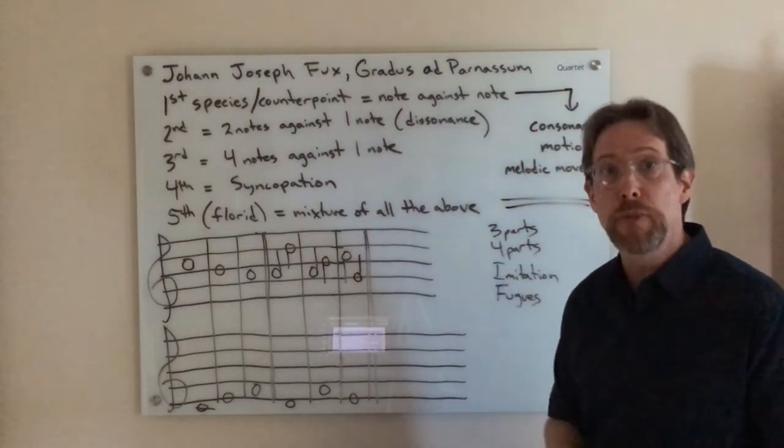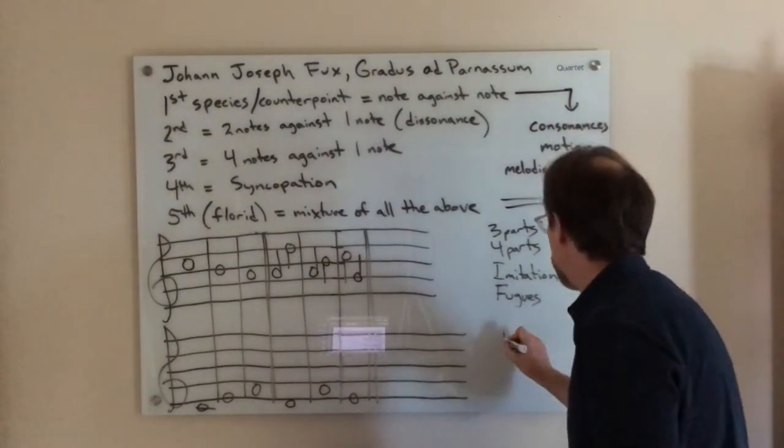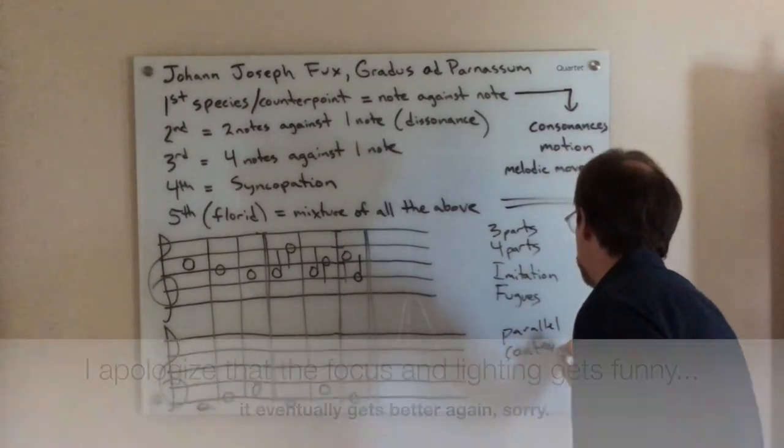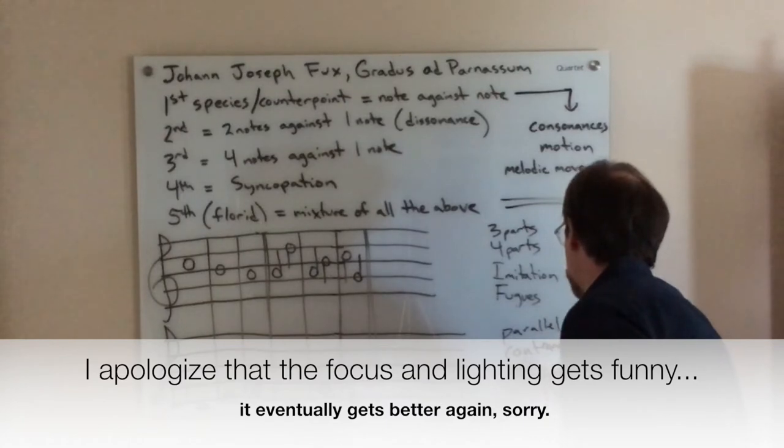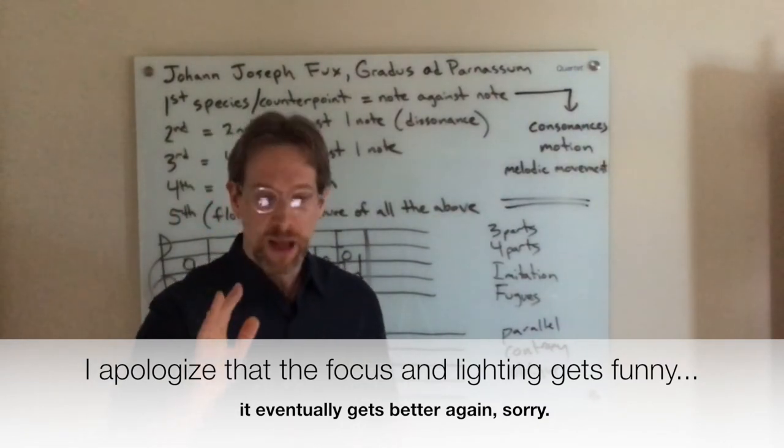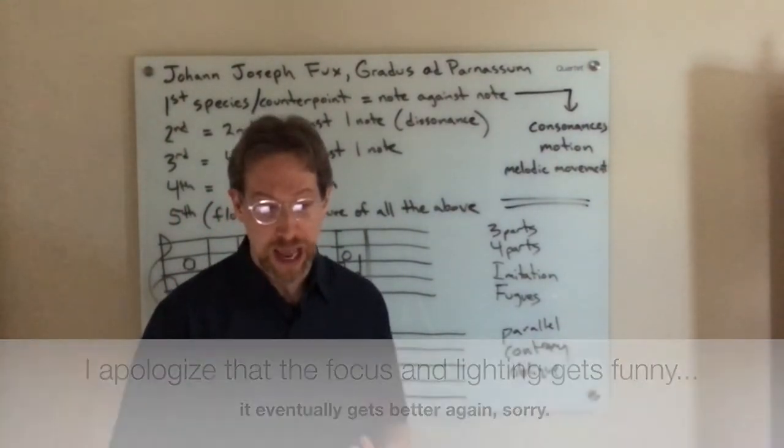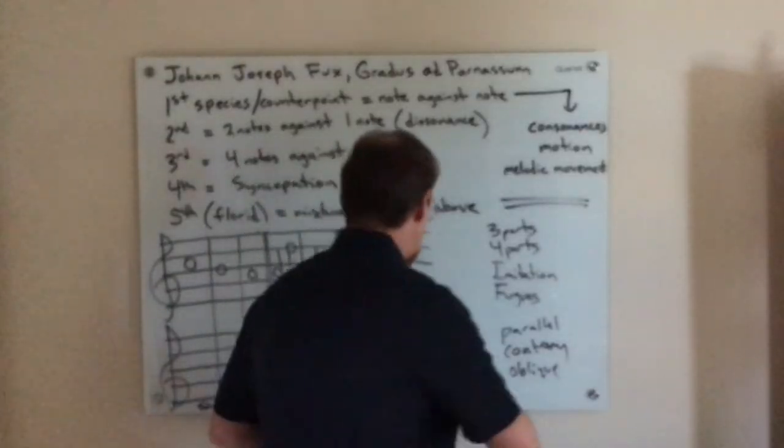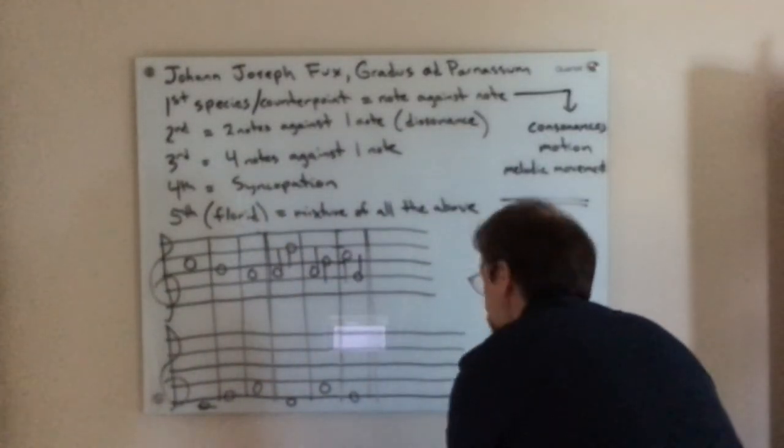Fux then talks about the motion, how the different voices can move. They can move parallel to each other. They can move in contrary motion to each other, oblique motion. And if this is something that you don't really quite understand, that's okay for now. But if you do want to know, I do have two lessons that I did where I've talked extensively about first species counterpoint. I'll put a link to those as well in the notes below. So if you want to delve deep into first species counterpoint, I have some lessons for you. But essentially, if I play this for you, it might sound something like...